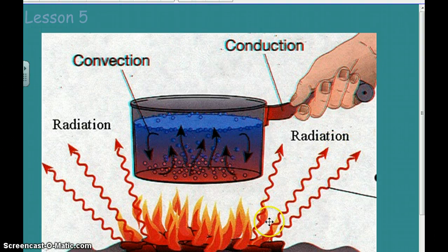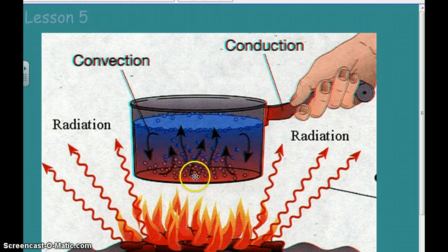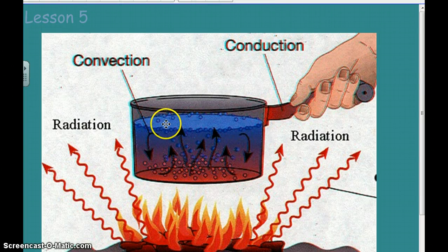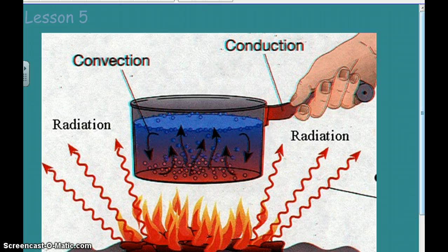We have radiation, the heat radiating from the flames into hitting the pan. Conduction, the handle getting hot. And then convection, the bottom getting heated more so it rises to the top. Hits the cool air and it cools. As it cools, it sinks back down and you get the circulation of energy.